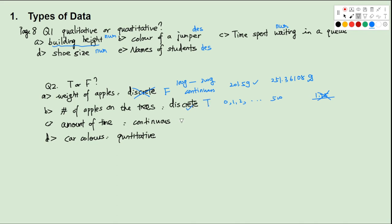Amount of time spent doing your homework — you can do it in 1 minute, 1.2 minutes, 1.05 minutes, or 10 minutes. Any number between 0 and 60 minutes can be reached, so amount of time is continuous. How about car colors? The statement says it's quantitative. But a car can be black, white, red, or blue — we can't use numbers to represent car color, so it's not quantitative, it's descriptive.